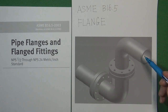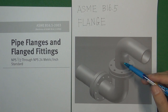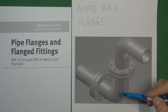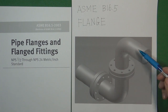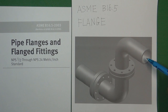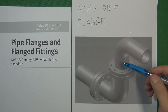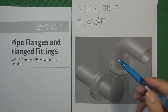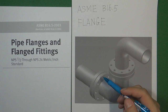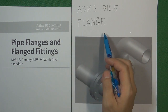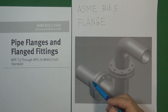In flow control systems, pipes are very important — we use them to control the flow medium inside, and we need to connect all the pipes together to make a system.